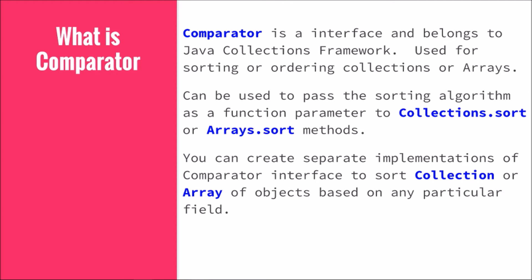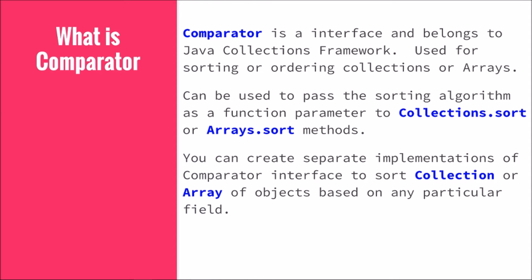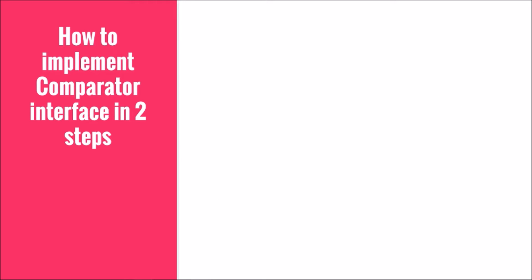You can create separate implementations of the Comparator interface for a single class — that means you can have many different Comparator implementations for one class. For example, if you have a User class with fields id and name, you can create separate comparator implementations for id and for name, passing the appropriate one depending on how you want to sort.